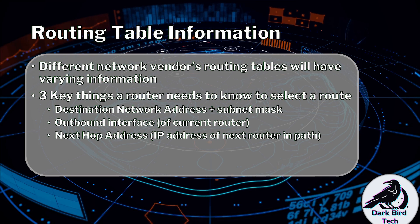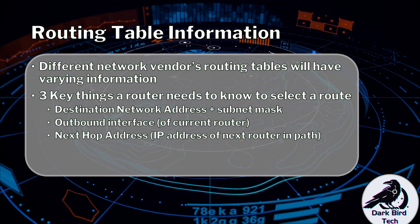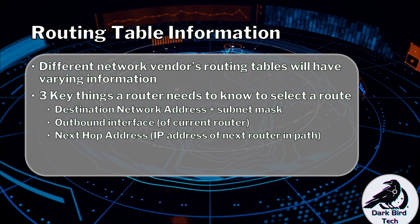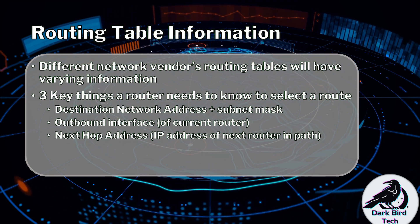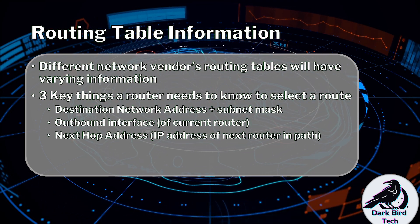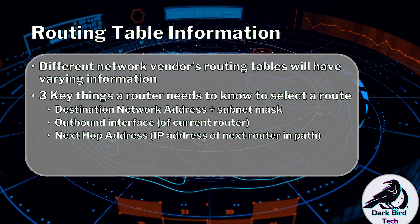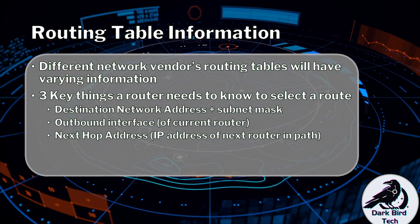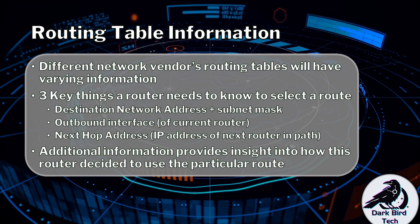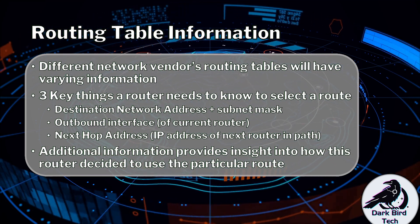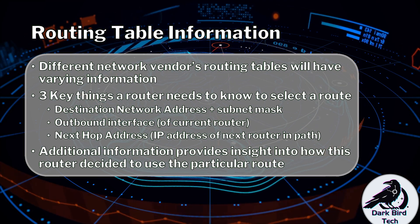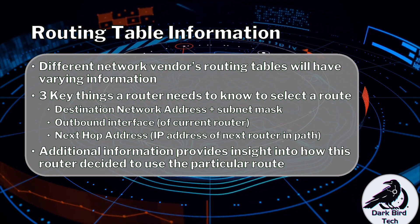Having these three key things in the routing table, a router will be able to successfully use this route any time a packet has that given destination network address as its destination IP. Any additional information gives you extra insight into how the router decided to use this particular route for that given destination.